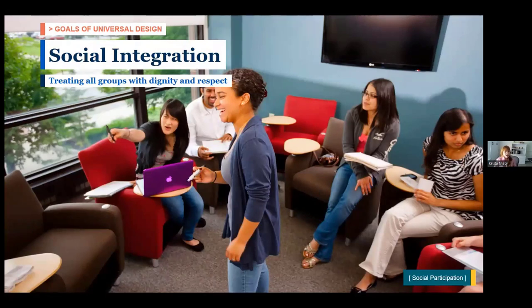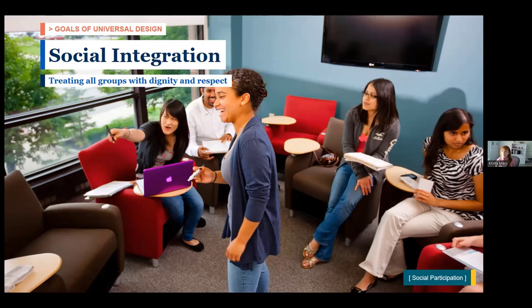The next goal is Social Integration: is your design treating all groups with dignity and respect? This image shows sociopedal seating — seats facing each other — which encourages conversation. But social integration also includes respecting people's needs. A library is a great example: some people want to be by themselves but surrounded by activity; some want to chat; some prefer their back to people. Respecting that desire improves social integration, so people aren't feeling pressured to behave a certain way and are more comfortable approaching different seating arrangements.